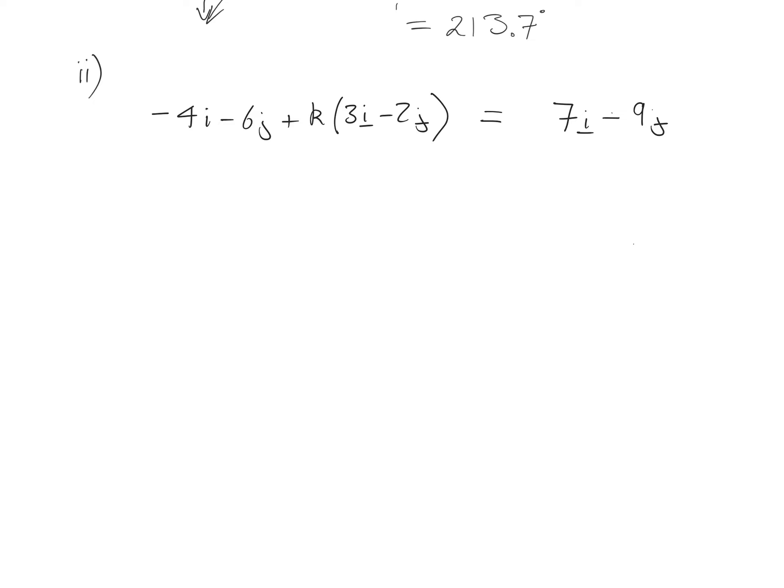So if we say that it is a multiple of that direction, let's say it's lambda lots of this vector, to use some notation that we use in core 4, then we know that these two are equal. Once we know that these two are equal, we've got two unknowns and we can solve two simultaneous equations, one in i and one in j, because we now know that the i components and the j components must be equal.